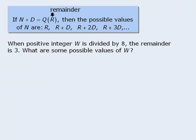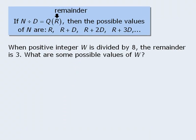Let's test out this rule with an example. When w is divided by 8, the remainder is 3. So what are some possible values of w? Well, the remainder here is 3. So this will be the first possible value of w.